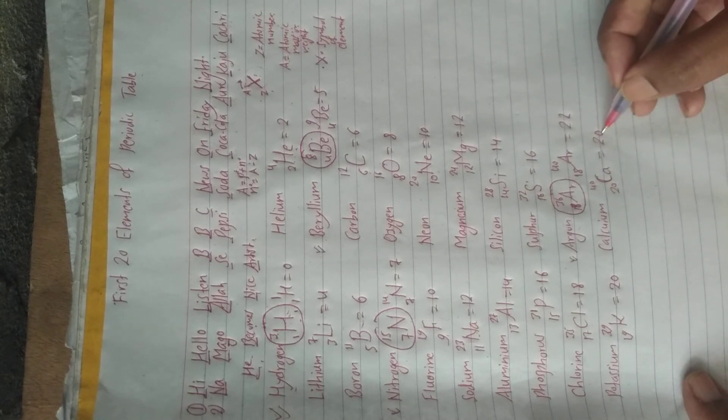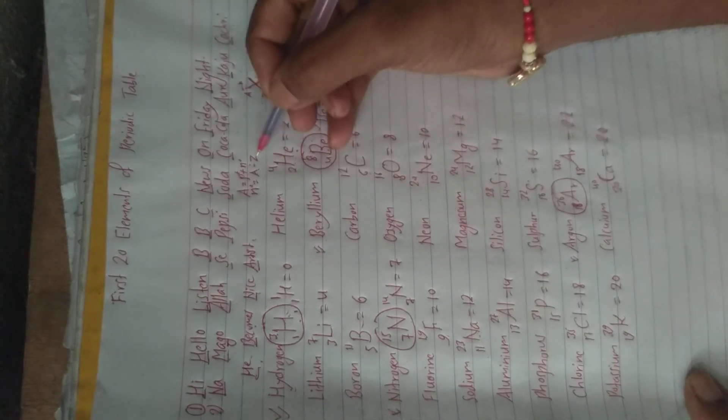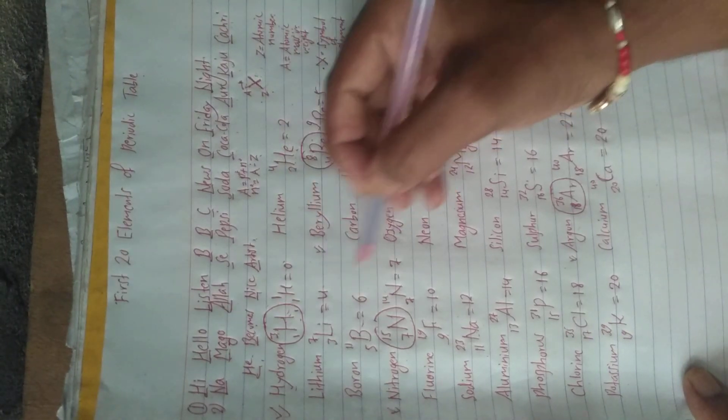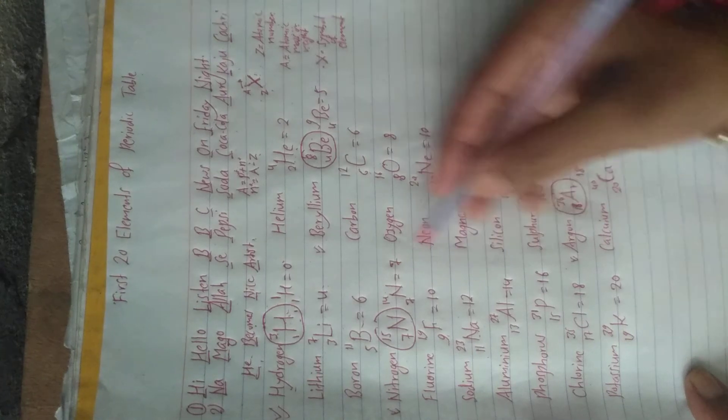So these are what we have subtracted from the atomic mass — we subtracted the atomic number — and what we got are the number of neutrons. So this is the trick we can follow to make the table for the first 20 elements of the periodic table. Hope you understood. If not, you can pause and watch the video again. Best of luck, see you in the next session, bye, take care.